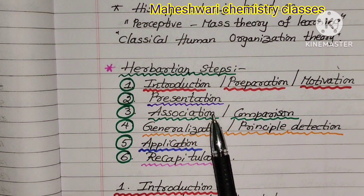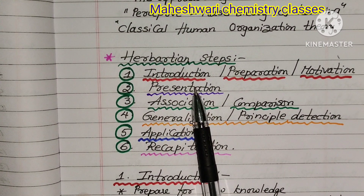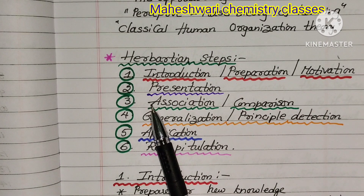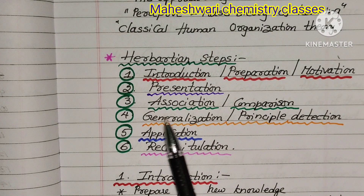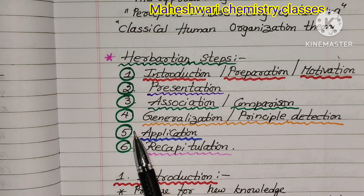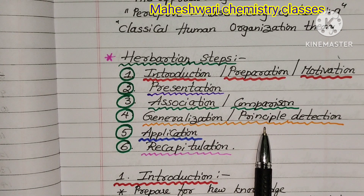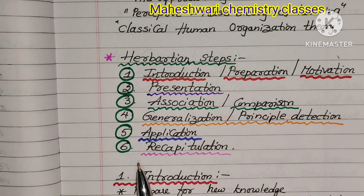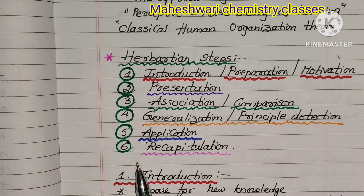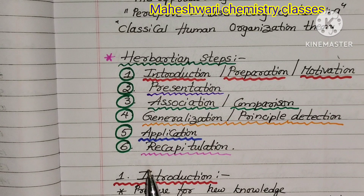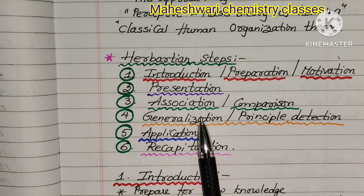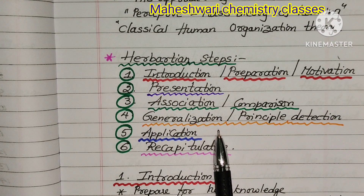The Herbartian steps are: first, Introduction or Preparation; second, Presentation; third, Association or Comparison; fourth, Generalization or Principle Detection; fifth, Application; sixth, Recapitulation. In Telugu: Sannaha, Hazard Parachidamu, Samstagamu, Sadharinikaranamu, Anvayamu, Punaravurthamu.